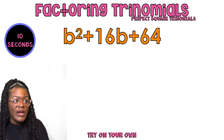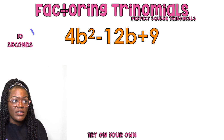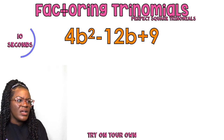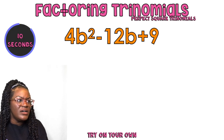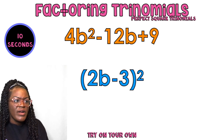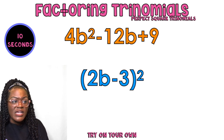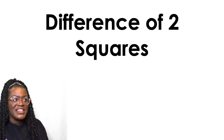The square root of b² is b, the square root of 64 is 8 — so the answer is b plus 8, quantity squared. Next: the square root of 4b² is 2b, the square root of 9 is 3, minus because there was a minus in the problem — quantity squared.